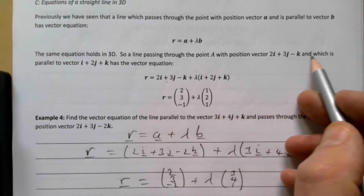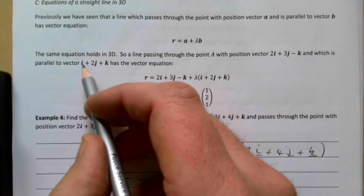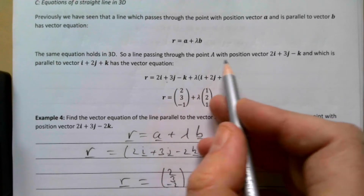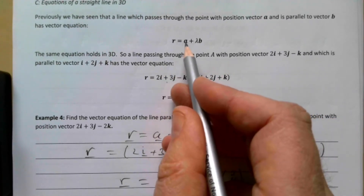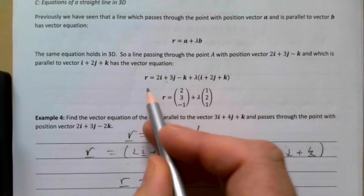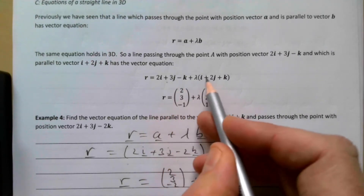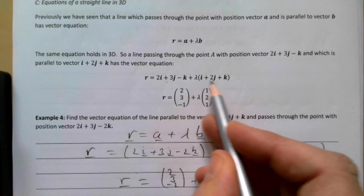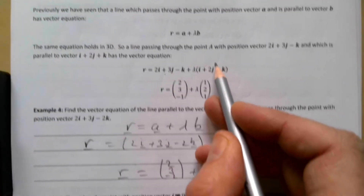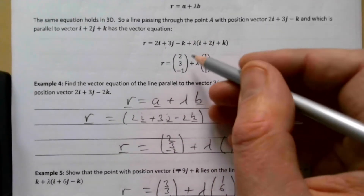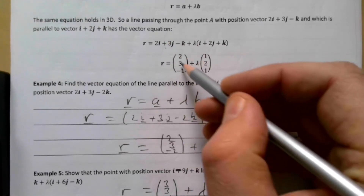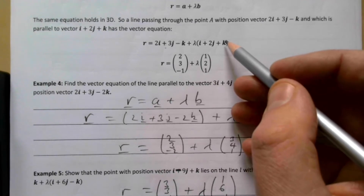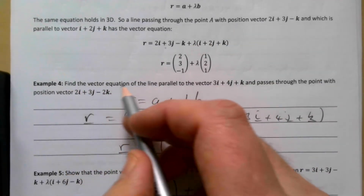So a line passing through the point with position vector 2i + 3j − k and which is parallel to vector i + 2j + k has the vector equation: the 'a' part is the position vector, so it's (2, 3, −1) plus λ times (1, 2, 1). You can write it in column form, which makes it a little easier: (2, 3, −1) + λ(1, 2, 1).